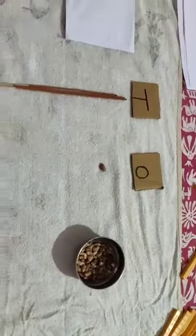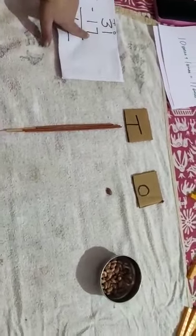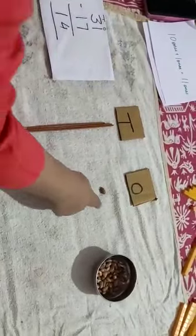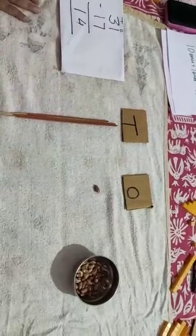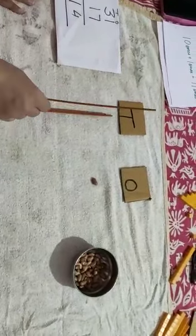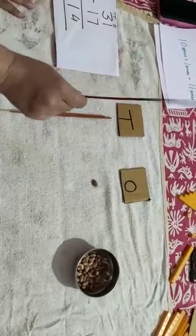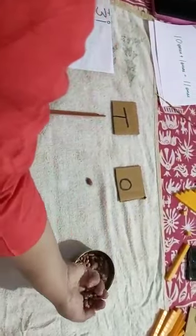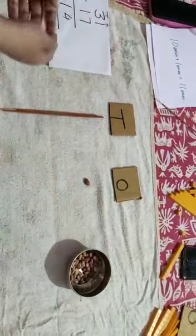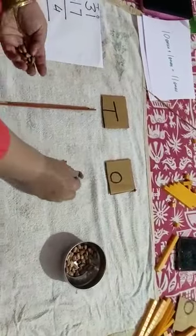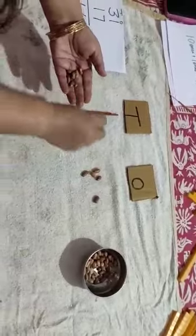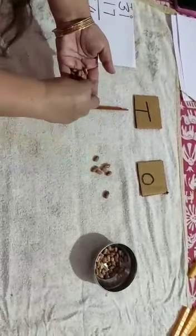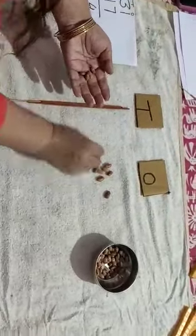And I need to remove seventeen. Can I remove seven from one? I have only one. How can I remove seven? So, again I need to do regrouping. This one stick will be replaced by ten rajma beans equals to ten ones. One, two, three, four, five, six, seven, eight, nine, ten. So, how many ones I have?